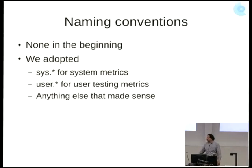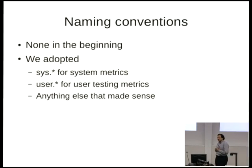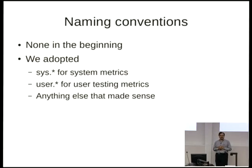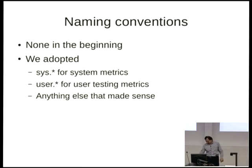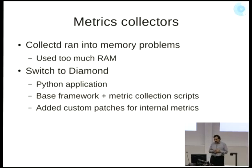SSDs are simply not reliable. On naming conventions, we had the Wild West at first, then we settled on a policy: sys.stars is for system metrics, only sysadmins can use that. Testing stuff goes under a .star namespace with your username. Anything else — use whatever makes sense. That's still the policy and we really don't care beyond that.